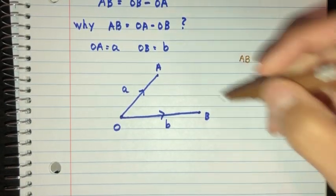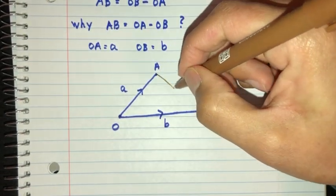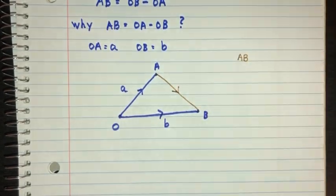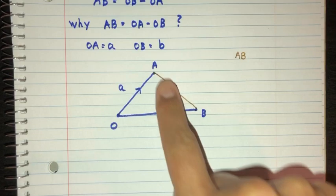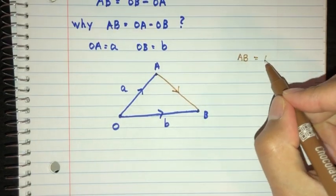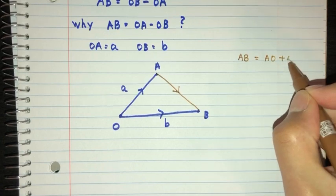Okay, so to find AB, we just have to join them, and the direction is from A to B. Now, to go from A to B, we have to go from A to O, and O to B. So A to O, and O to B.